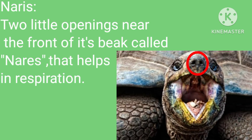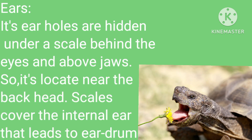It has a third eyelid to protect the eye while burrowing. Its eyes can see in a small range of colors. Naris: two little openings near the front of its beak called naris that help in respiration. Ears: its ear holes are hidden under a scale behind the eyes and above the jaws, so they are located near the back of the head.